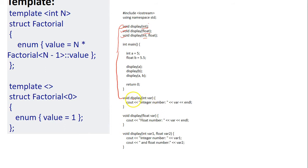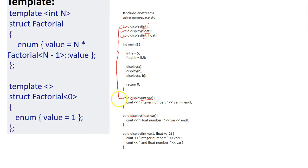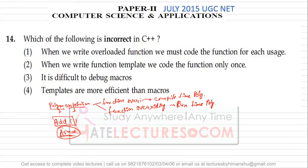According to the arguments, the compiler differentiates between functions with the same name and calls the appropriate one. We are coding each display function for a different purpose. The signature includes return type, arguments, and function name. In overloading, return type and name are the same, so functions differ by arguments. So option one is correct — it is a true statement.